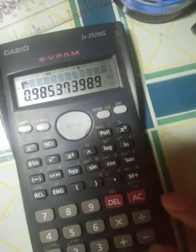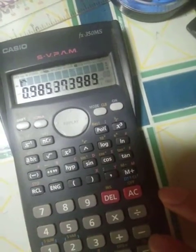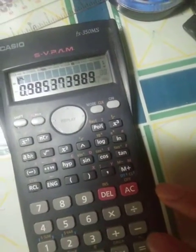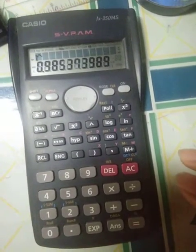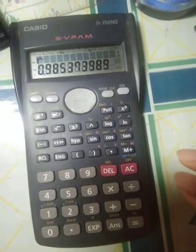The regression coefficient is 0.985373989. That is how you get the correlation using your scientific calculator.